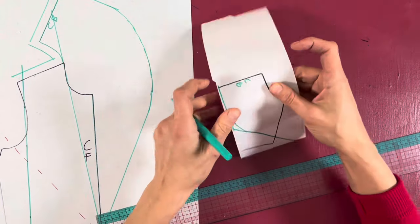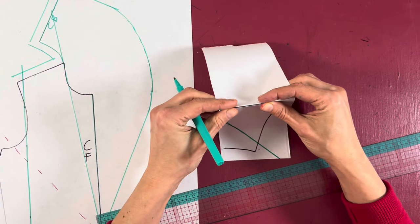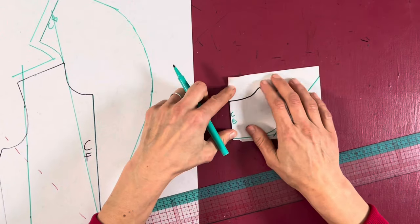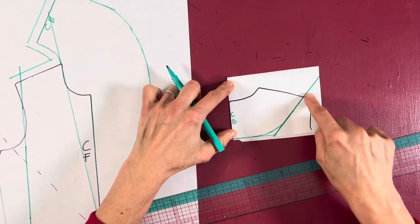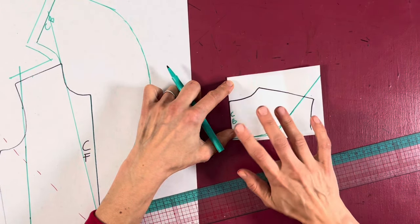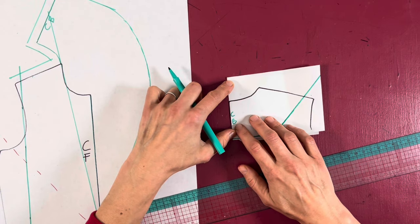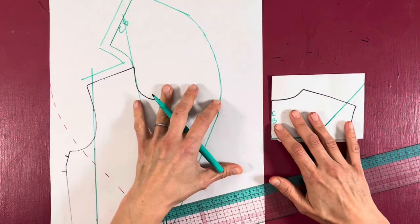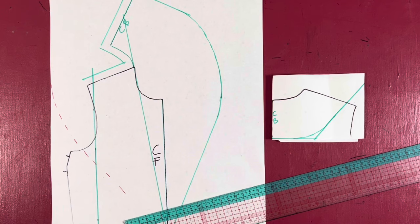do your center back on the fold, because we don't need a seam there. So you just fold it in half, then add seam allowance everywhere else, pin it together and cut it out on the fold. You get one pattern piece, and these are all the pieces you need for your shawl collar stole.